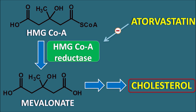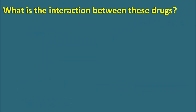We have discussed the details of rifampin and atorvastatin. There is no structural similarity between them — rifampin is a large structure belonging to the rifamycins, while atorvastatin is an aryl heptanoic acid. They also differ in mechanism: rifampin inhibits DNA-dependent RNA polymerase in mycobacteria, while atorvastatin inhibits HMG-CoA reductase in the liver. So what is the interaction between these two drugs, and how do they interact?